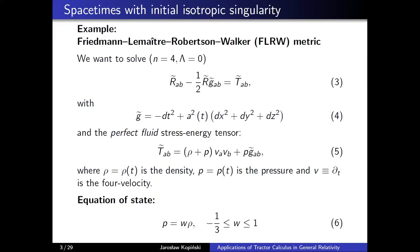Before I give a definition of a general spacetime of this type, let me go through an example which highlights the main features of these isotropic singularity spacetimes. In this example I want to solve four-dimensional Einstein field equations with vanishing cosmological constant — that's equation 3 — and I want to assume that the metric g̃ has the form visible in equation 4.